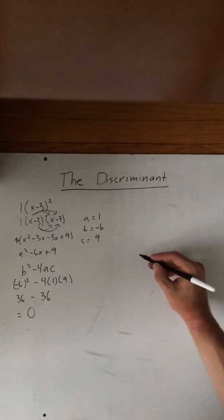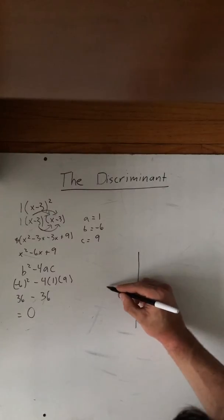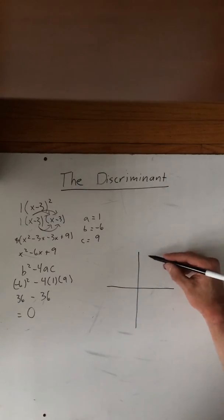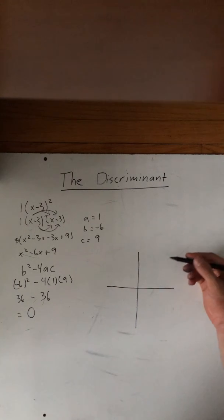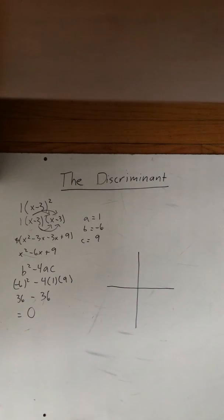And this is because, if you were to graph this, when the discriminant is 0, it tells us that there is only one x intercept. So there are three things that the discriminant can tell us.